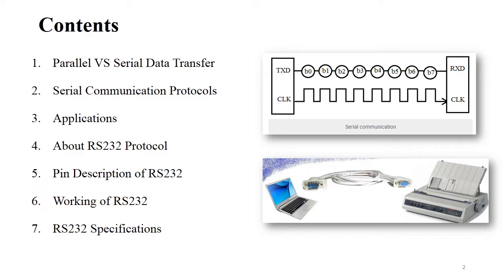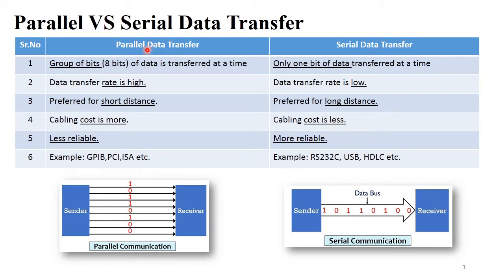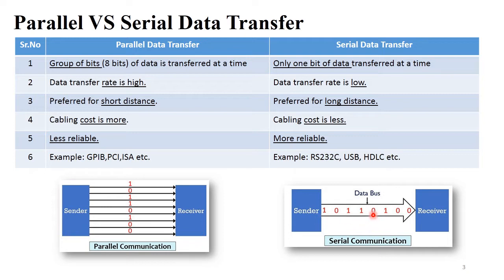Before moving forward to RS-232 protocol, the first point is parallel versus serial data transfer. In this table there is a difference between parallel and serial data transfer. In parallel data transfer, the sender can send a group of 8 bits of data to the receiver at the same time — this is called parallel communication. In serial communication, the sender can send data bit by bit at a time to the receiver. This is the main difference: parallel communication sends a group of bits simultaneously, so its data transfer rate is high.